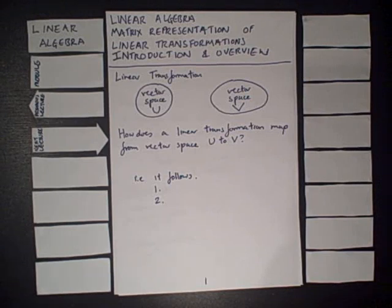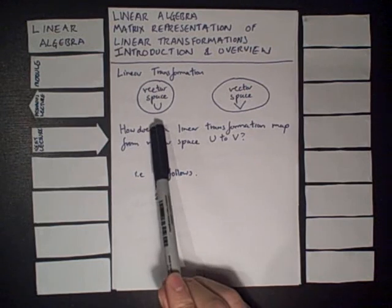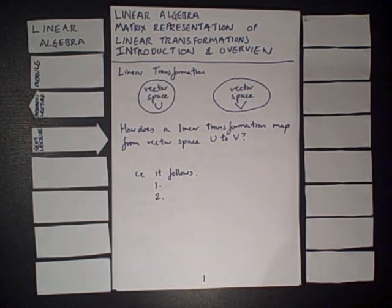In the vector space world, one very common type of function, and a function that we are very interested in, is the linear transformation. What this does is it maps vectors in the vector space U to the vector space V.